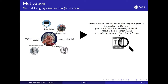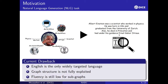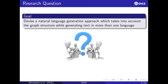What's the current drawback with these approaches? These approaches rely majorly on English as the target language. Also, the graph structure is not fully exploited. Additionally, the fluency of the generated text is low when receiving large subgraphs as input. So then it comes to our research question: how can we devise a natural language generation approach which takes into account the graph structure while generating text in more than one language?